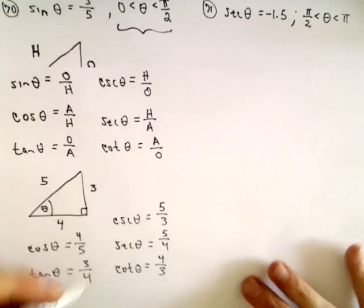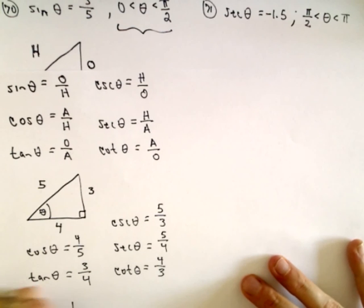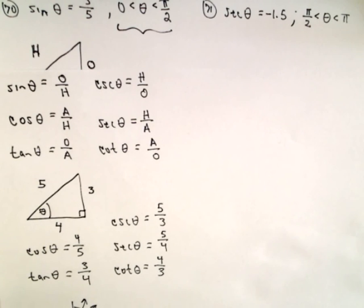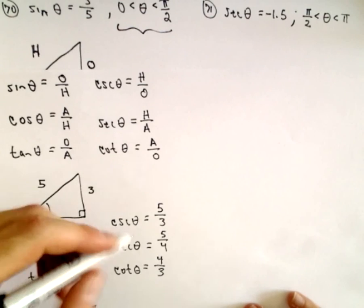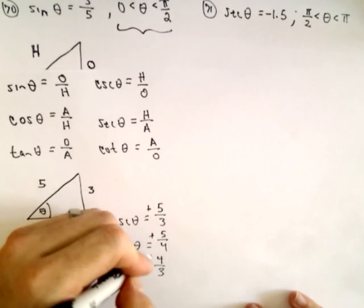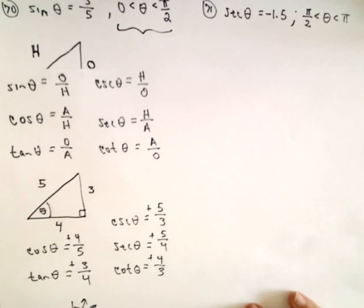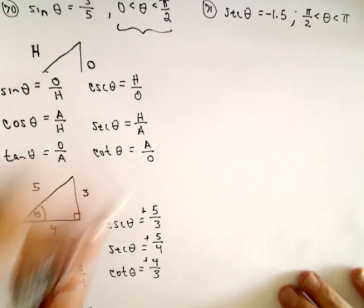And the angle, so it says my angle is between zero and pi over two. So in terms of the unit circle, that tells me that it's the angle somewhere in the first quadrant. And in that case, all the trig functions are going to be positive, so all of these will be positive. So we're done, we've found the other remaining values.